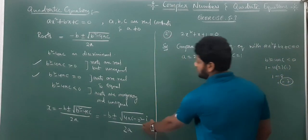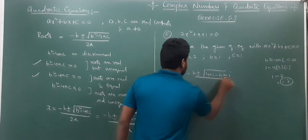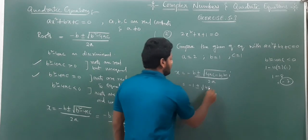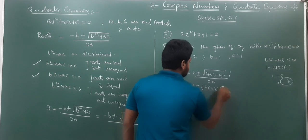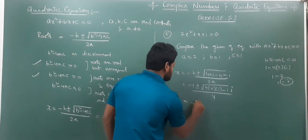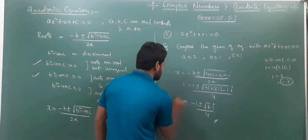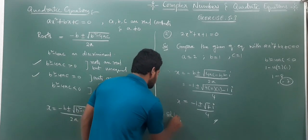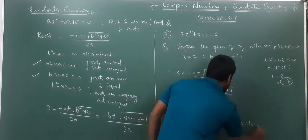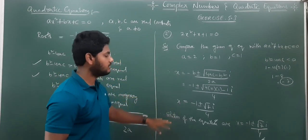Substituting: x = (-1 ± √(4·2·1 - 1)·i) / (2·2) = (-1 ± √(8-1)·i) / 4 = (-1 ± √7·i) / 4. Therefore, the solutions of the equation are x = (-1 ± √7·i) / 4. In this chapter, you will get two 3-mark questions: one based on converting complex numbers into polar form, and one based on finding roots of quadratic equations.